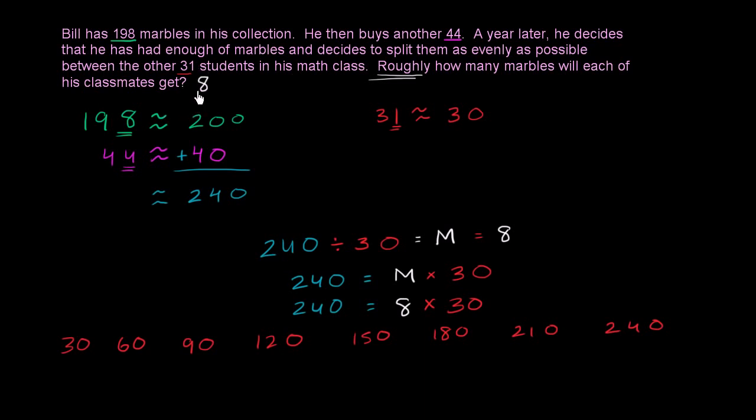Once again, this is an estimate. It's not an exact answer. Now you might have tried to get a slightly more precise answer. If you didn't want to round 198 and 44, you could have just added the two.